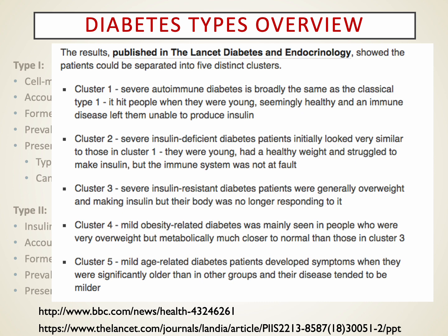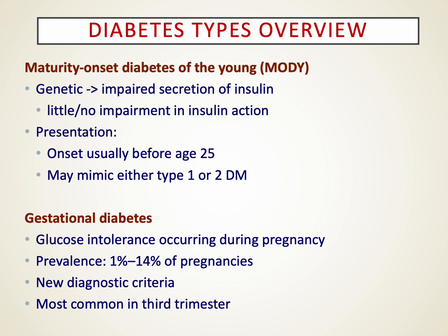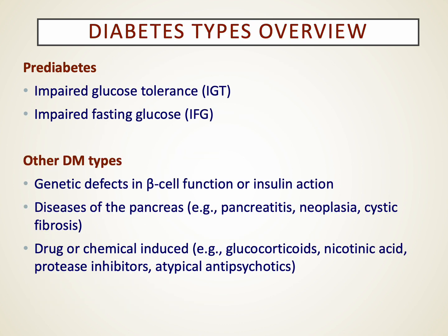This also alludes to prediabetes or metabolic syndrome. Patients who don't make lifestyle changes in diet and exercise are at high risk for developing type 2 diabetes. Maturity onset diabetes of the young is a variation involving genetic impairment of insulin secretion where those patients require insulin as well. There is also gestational diabetes seen during pregnancy. All of this reflects the evolving pathophysiology and classification of diabetes.